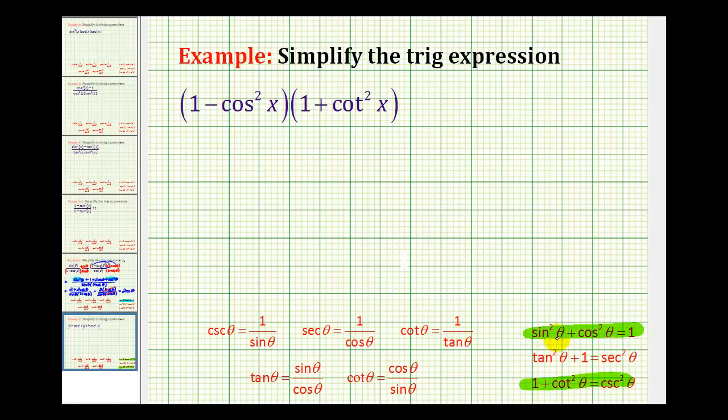If we take this identity here and subtract cosine squared on both sides, we would have sine squared theta is equal to 1 minus cosine squared theta. And then 1 plus cotangent squared theta is equal to cosecant squared theta. So 1 plus cotangent squared x is equal to cosecant squared x.